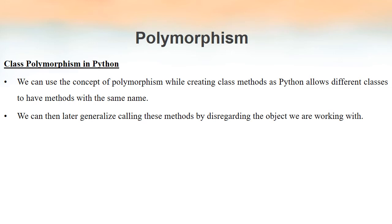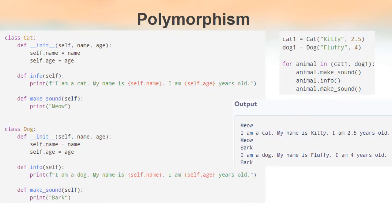Let's look at an example to make this clear. In this example, we have two classes, namely Cat and Dog. Inside Cat, we have its constructor and two methods: info and makeSound. Similarly, Dog also has its constructor and the same two methods: info and makeSound. The methods inside class Dog have the same names as those inside class Cat. Now we create objects — cat1 is the object of class Cat and dog1 is the object of class Dog. We then use a for loop to iterate over them.